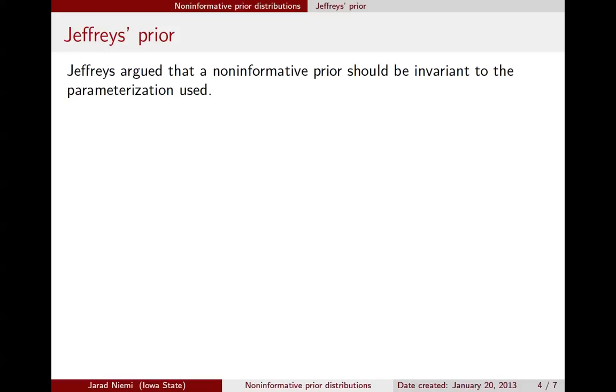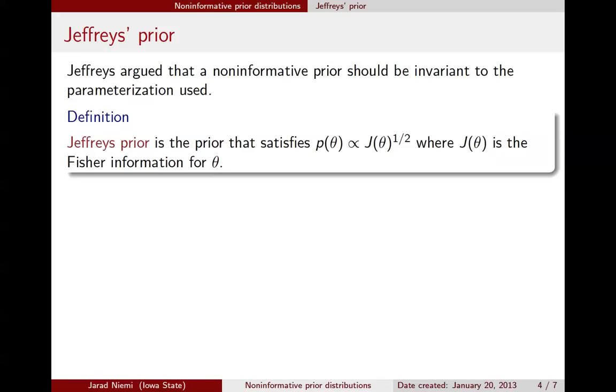So Jeffreys argued that any non-informative prior that we want should be invariant to the parameterization that's actually used. And it turns out that if you create a prior that's proportional to the square root of the Fisher information, and we call this the Jeffreys prior, it turns out that that prior is, in fact, invariant to the parameterization that's used. So in this binomial model, this actually leads to a beta 1 half, 1 half prior.